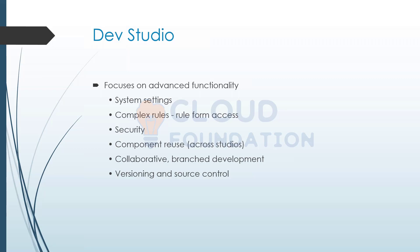On App Studio you can only implement an SLA and apply it, but in order to work on the rule itself you have to come back to Dev Studio. Things like skin rules are specific to Dev Studio, as are branch development, versioning, and source control — all part of Dev Studio.